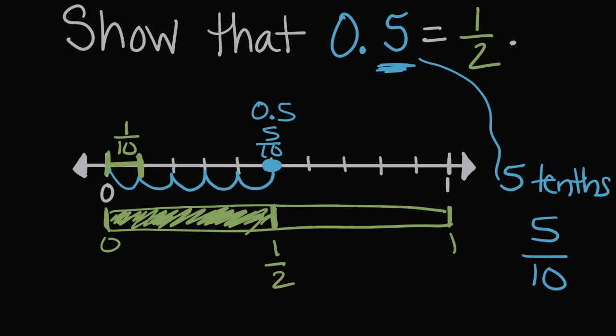So 0.5 and 1/2 are at the same point on a number line. That's one way to show they're equivalent.